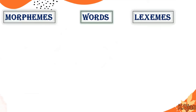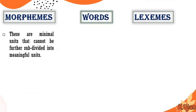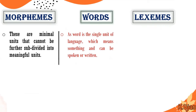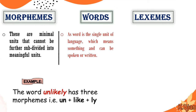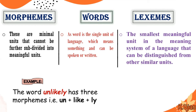There are three key terms in word formation: morphemes, words, and lexemes. Morphemes are minimal units that cannot be further subdivided into meaningful units. A word is a single unit of language which means something and can be spoken or written — for example, unlikely has three morphemes: un, like, and ly. The smallest meaningful unit in the meaning system of a language that can be distinguished from other similar units is known as a lexeme.